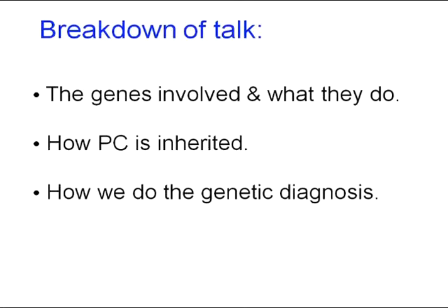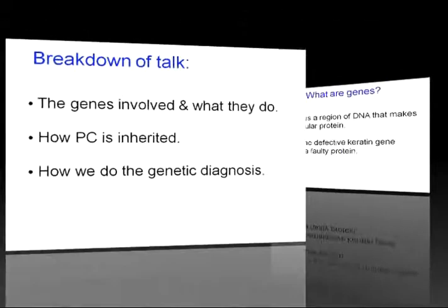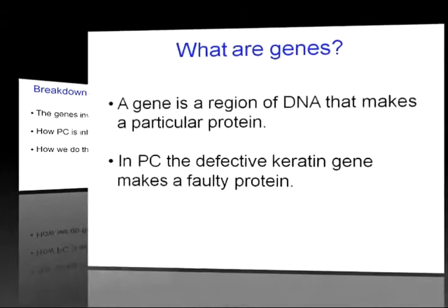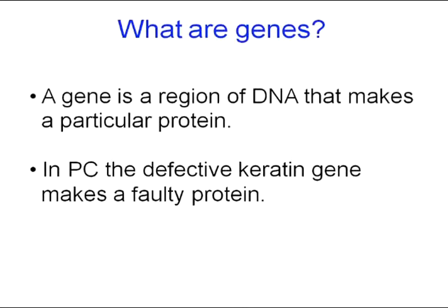So basically what we do with the saliva or blood samples when you send them to Dundee. What are genes? Well, a gene is a region of DNA that makes a particular protein. So in the case of PC, we're looking at some of the keratin genes. So if we have a mistake in one of these genes, it makes a faulty protein — in this case, faulty keratin.